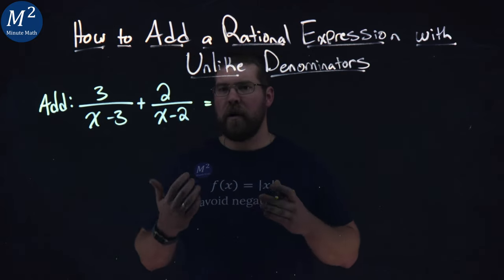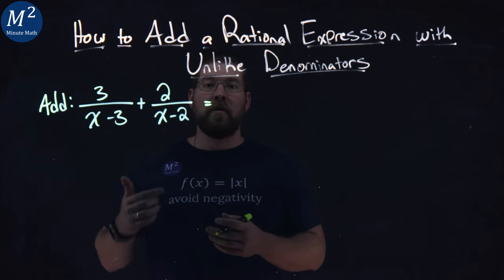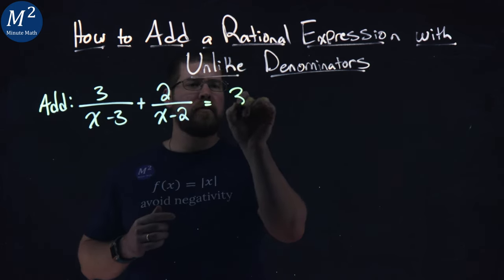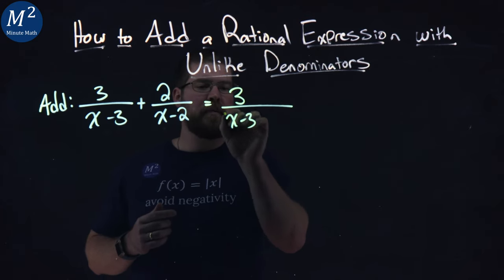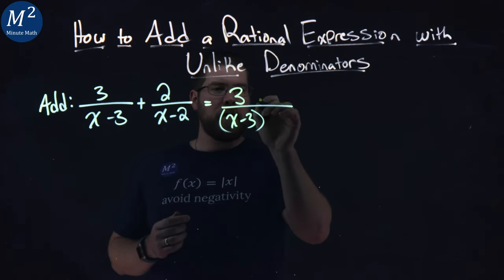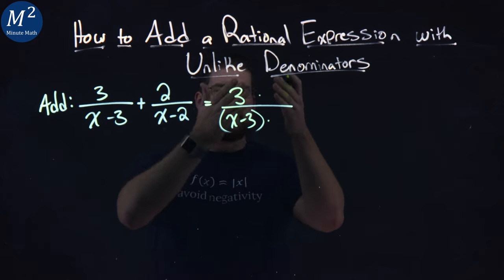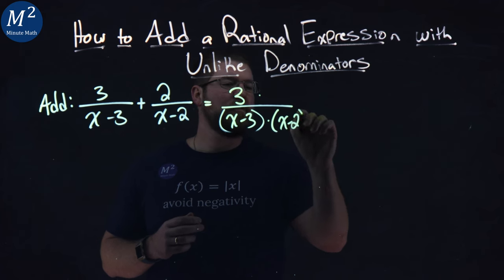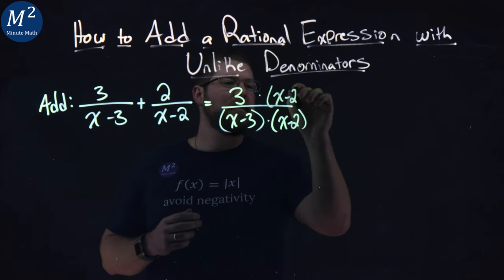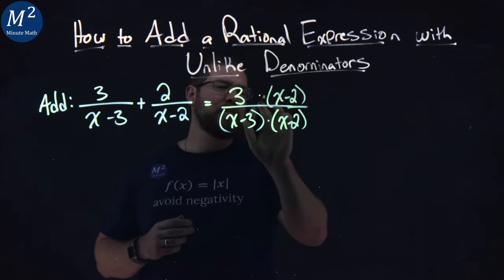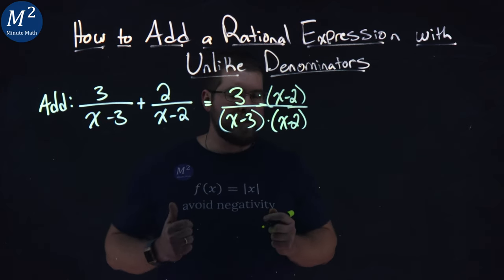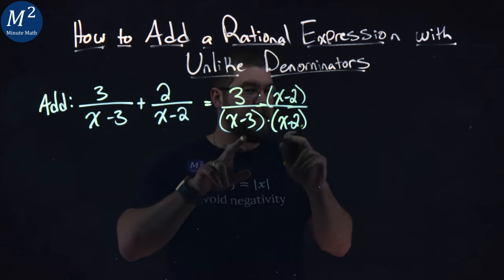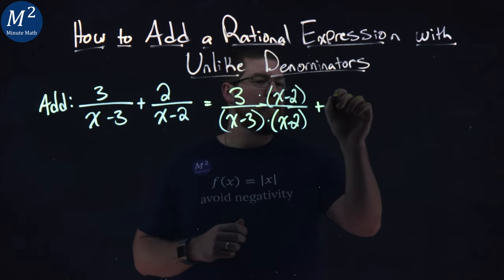But we can't just do that directly. We can't change the fraction that way. Whatever we do to the numerator, we have to do to the denominator. So what I'm going to do is 3 over x minus 3. I'm going to multiply this, and you can put it as a separate fraction or right in the same fraction here. I'm going to multiply this by an x minus 2 over an x minus 2. You can separate that if you want, but really, it's going to be combined here.